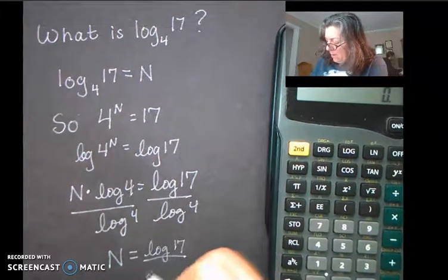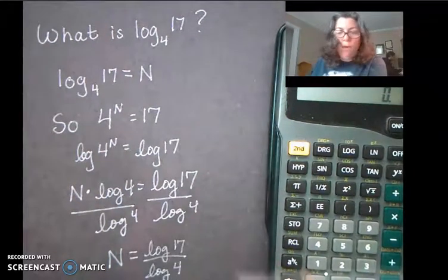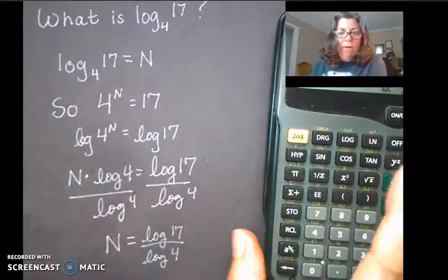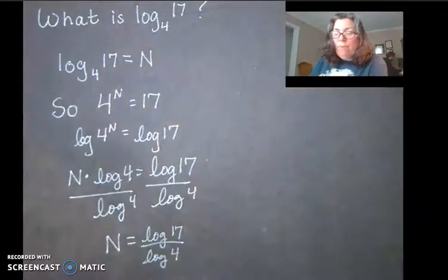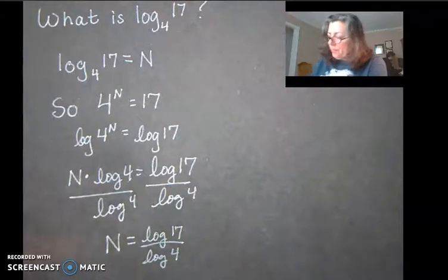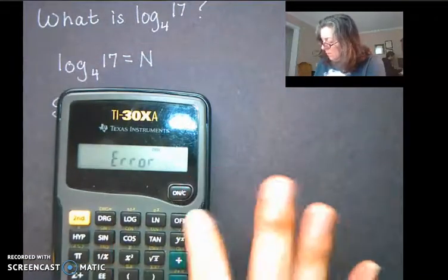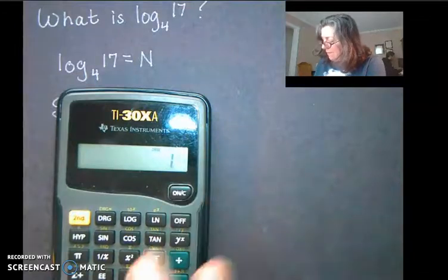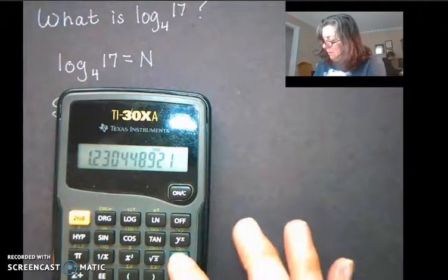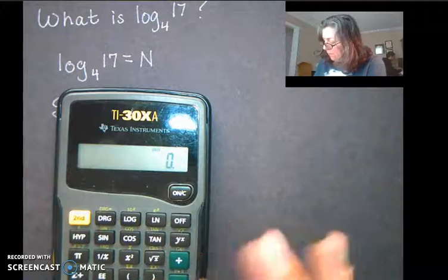And divide it by the log of 4. Now that's called the change of base formula. Let's see if it worked. So log... whoops, I did it backwards. I need 17 logarithmed divided by 4 logarithmed.